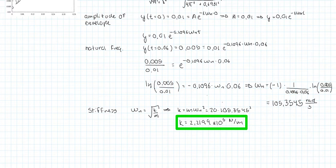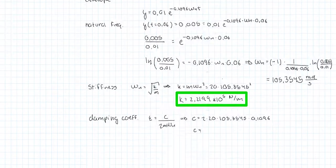And finally, the second part of the answer is to find the damping coefficient. We said that the damping ratio was equal to the damping coefficient divided by 2 times the mass times the natural frequency. And so the damping coefficient is equal to 2 times 20 times 105.3545 times 0.1096. And so we get that the damping coefficient is equal to approximately 462.